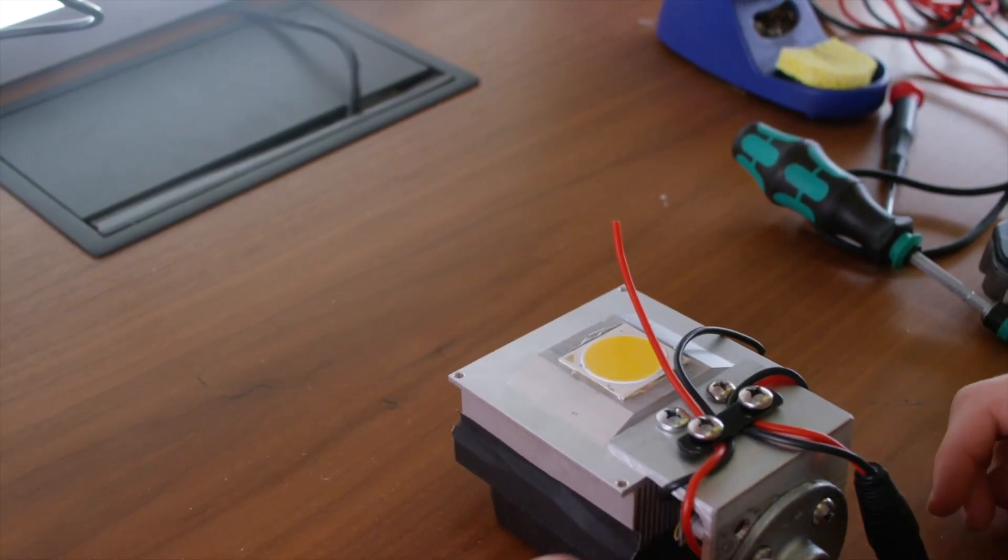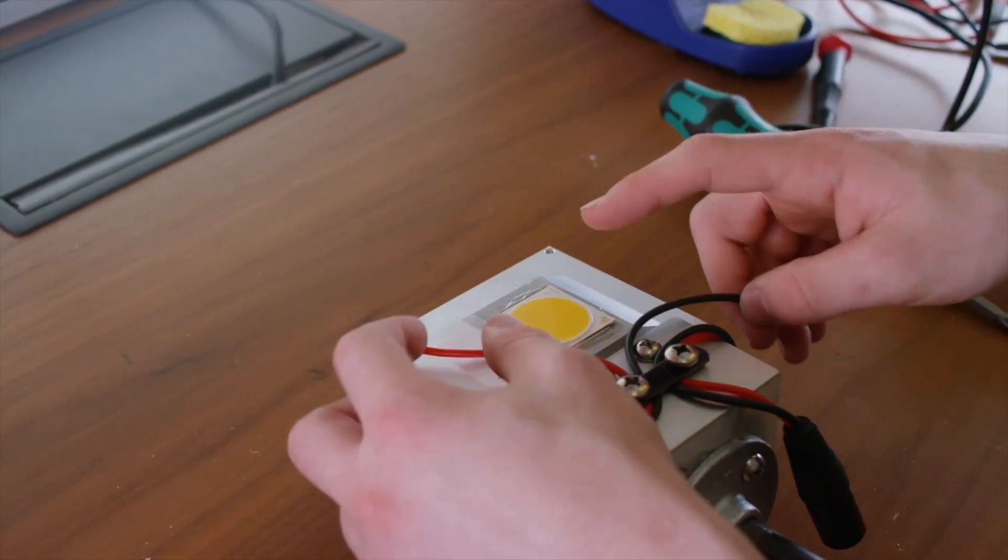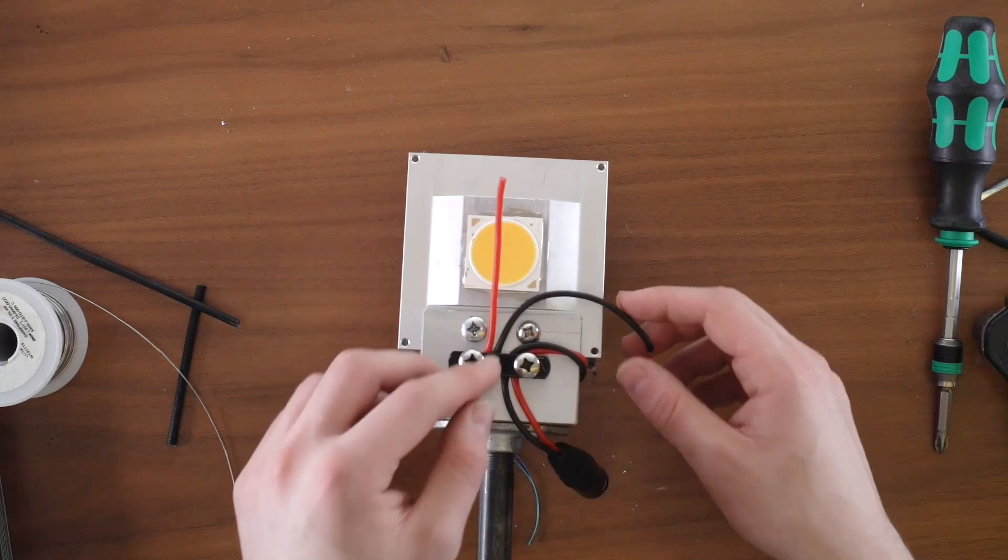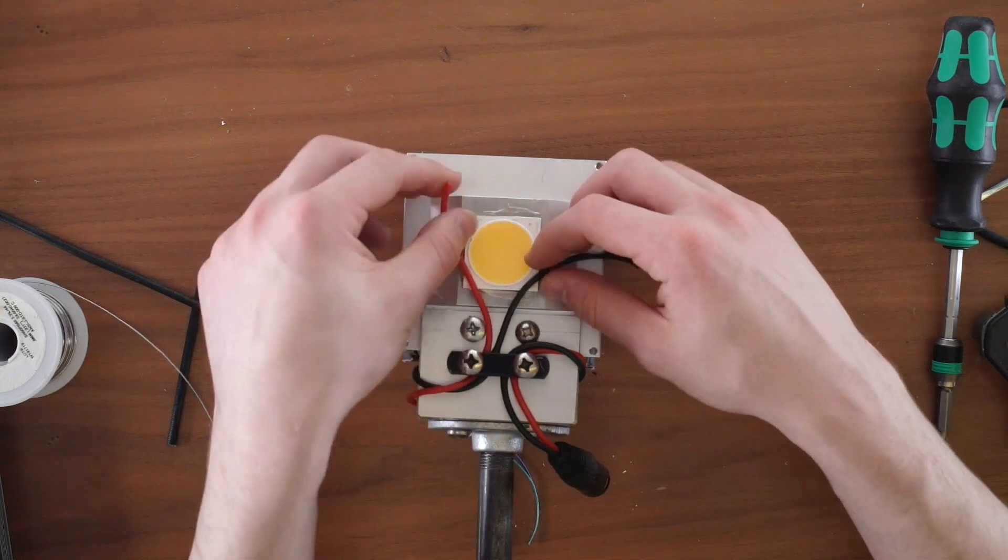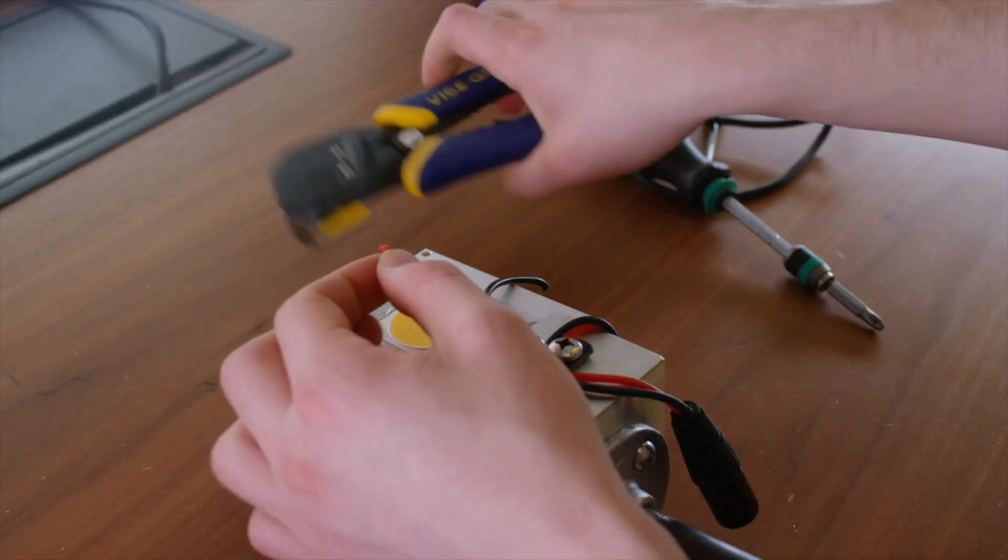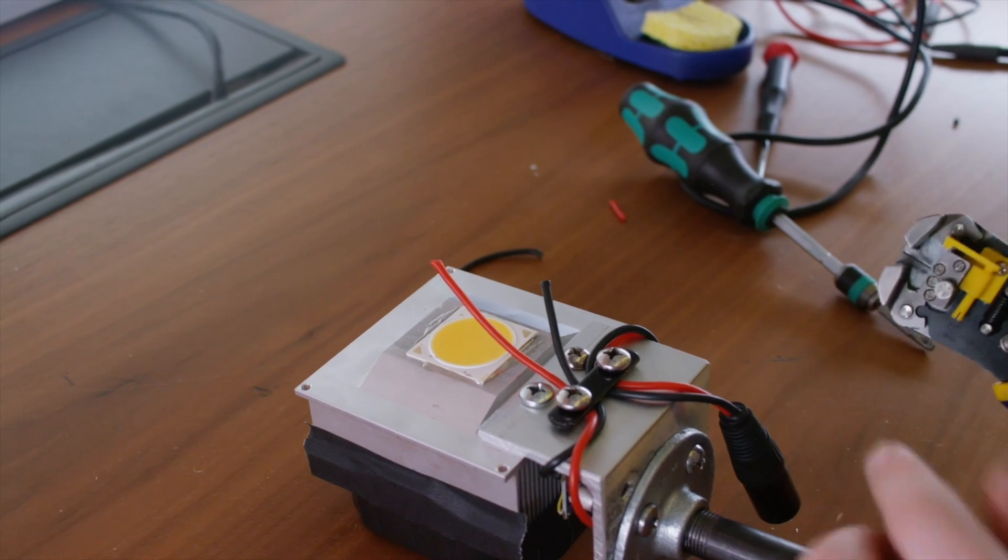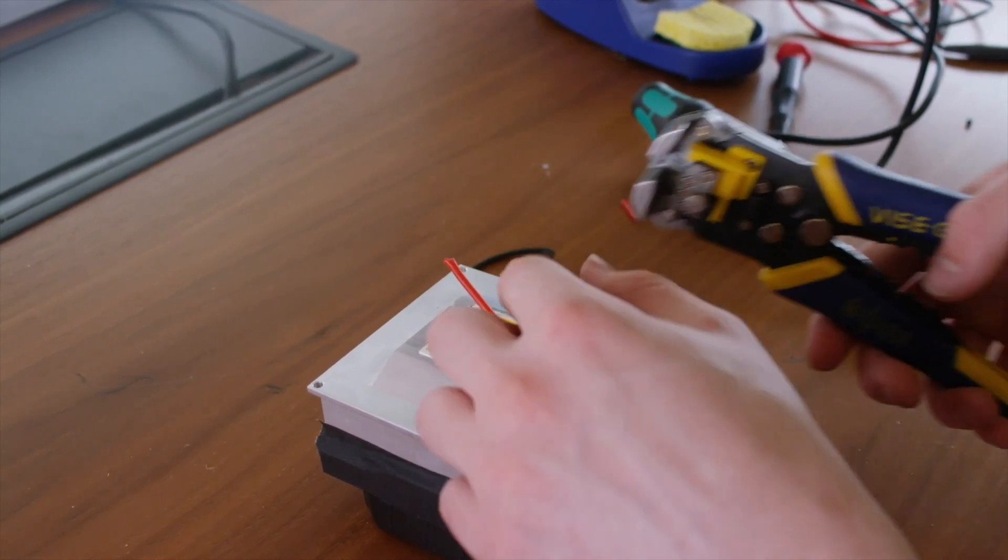The next thing and the final thing I'm going to do is solder these wires here to the pads on the LED. I'm going to go ahead, find the right length, and then cut them to length. Once they're cut, I'm going to strip them, tin them, and solder them.